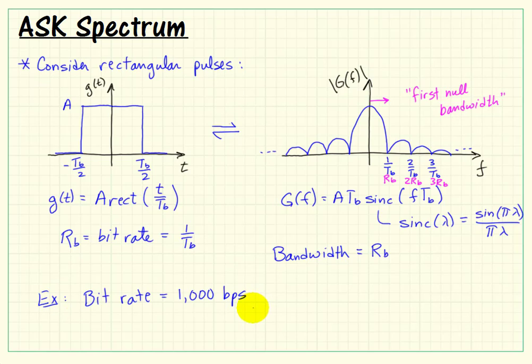To put a number on that, supposing we were signaling at 1000 bits per second, that says the required bandwidth then is at least one kilohertz, two kilohertz.